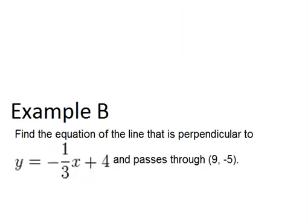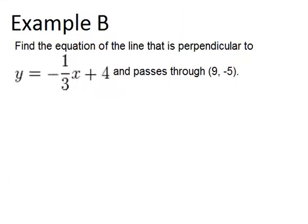Alright, let's look at example B. Find the equation of the line that is perpendicular to y equals negative one-third x plus four, and passes through nine, negative five.